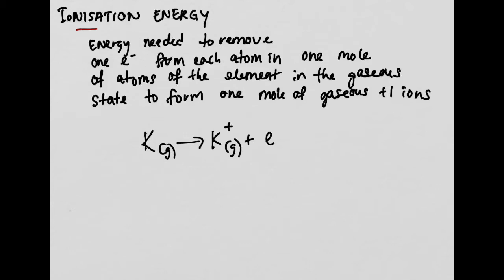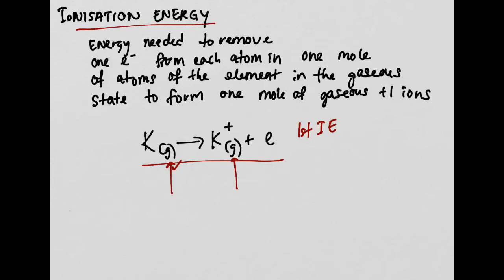The next topic is ionization energy. Ionization energy is the energy required to remove one electron from each atom in one mole of atoms, and they must be in gaseous state. We need to supply energy to remove electrons from an atom, so it is an endothermic reaction. This equation represents the first ionization energy. It must be in gaseous form — it is very difficult to remove electrons when they are in solid or liquid form.